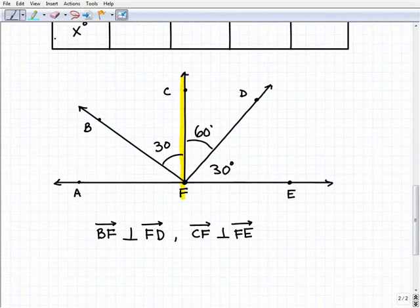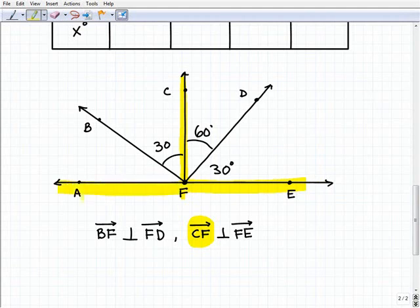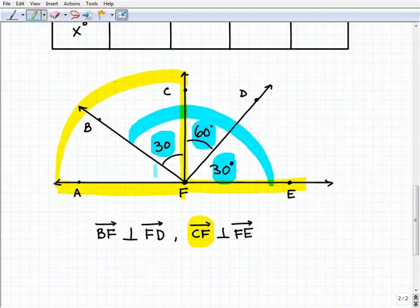How can we find this last angle? We know that CF is perpendicular to FE, but FE, that ray is also part of a line formed by AFE. Therefore, these two rays are perpendicular. Or you can look and see that you have 30, 60, and 30 right here. Either technique or strategy will work. I know that AFC is also 90 degrees, perpendicular to one another. If this is 30, this has to be 60 degrees right here.